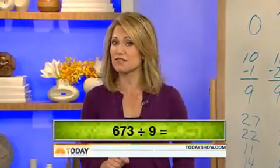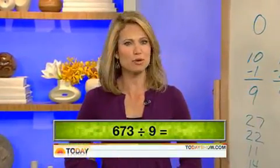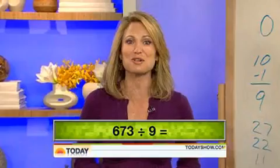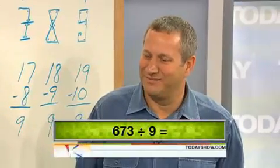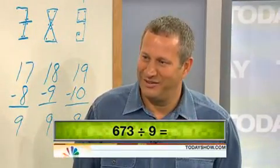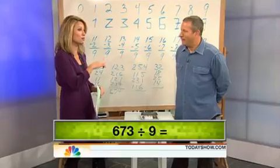How fast can you divide 673 by 9? Well, Scott Flansberg has already done it. He holds the Guinness World Record for the fastest human calculator, and he's here to talk about the American Math Challenge. But first, we're going to challenge him a bit ourselves.